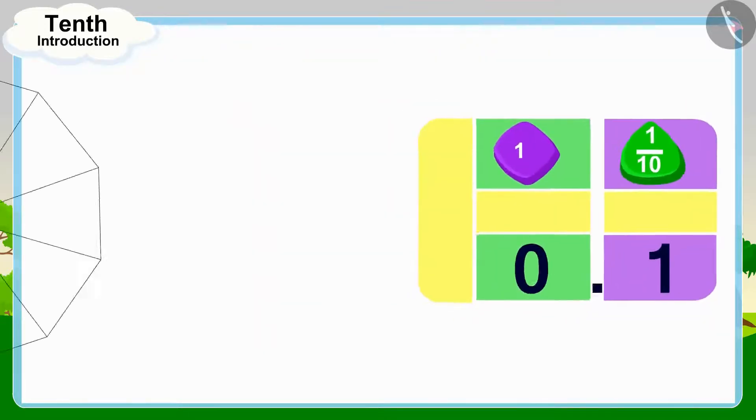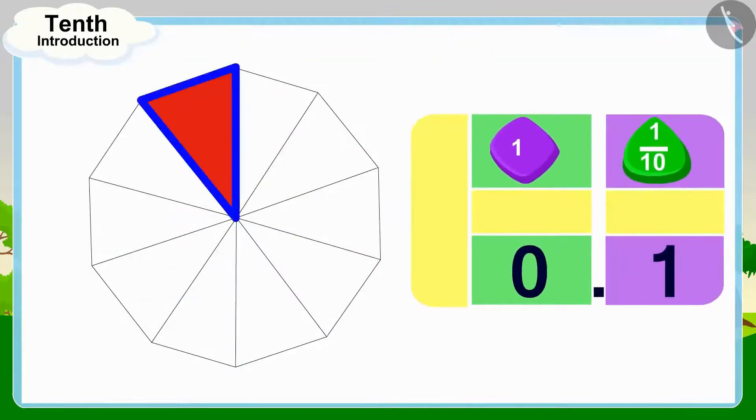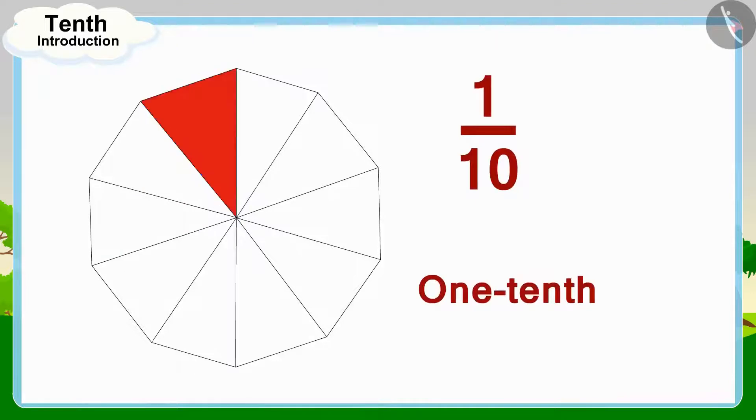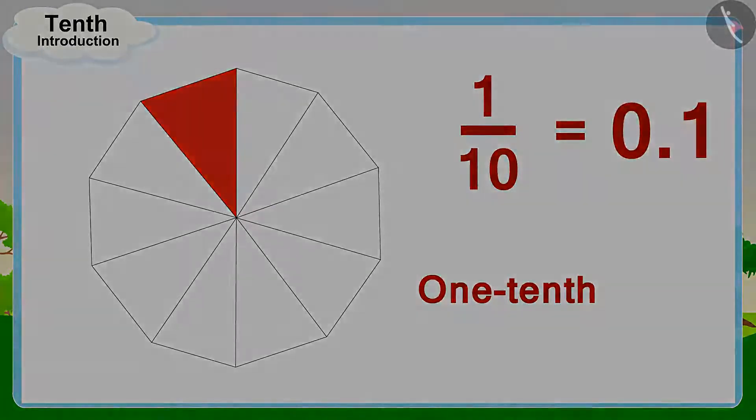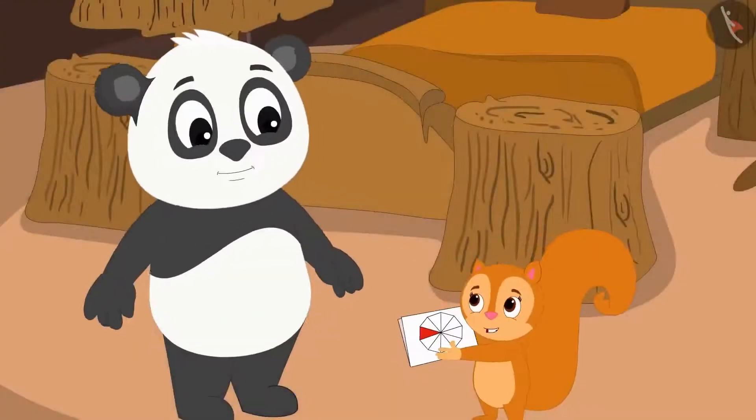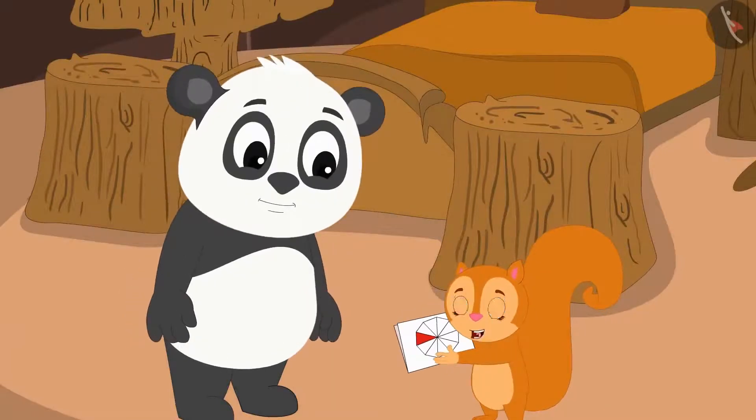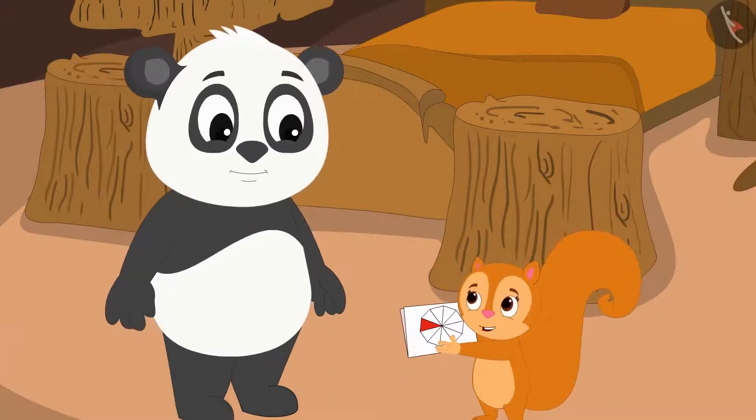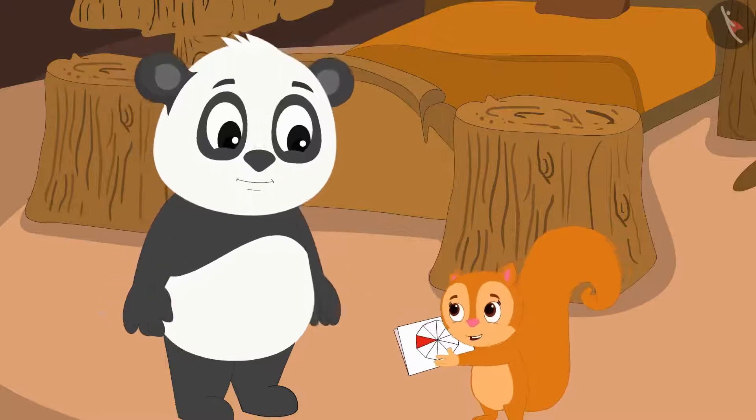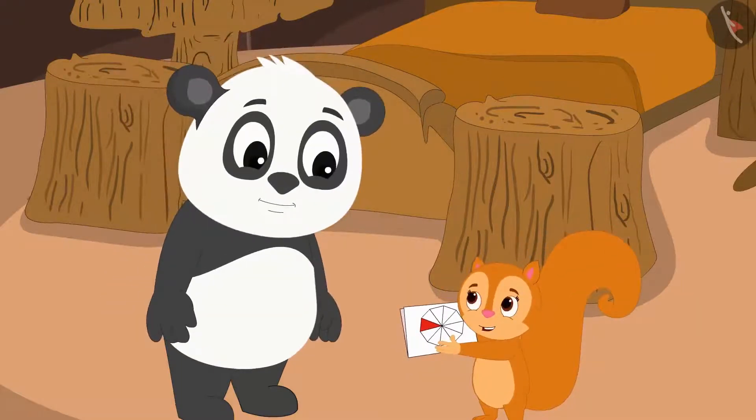In this way, we write one tenth part of your whole flower as 0.1. Wow, Golu, this is so much fun. Now you quickly paint these remaining parts too, so that we can give it to Babban.